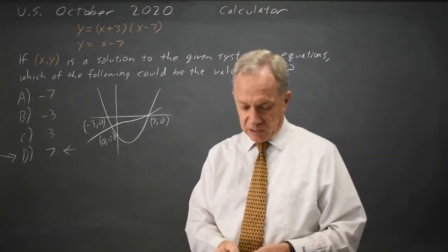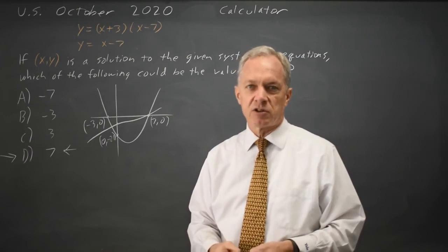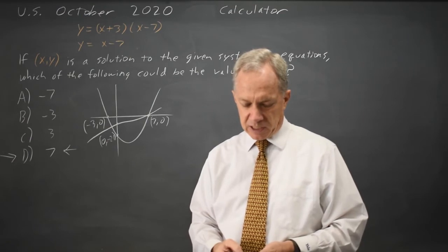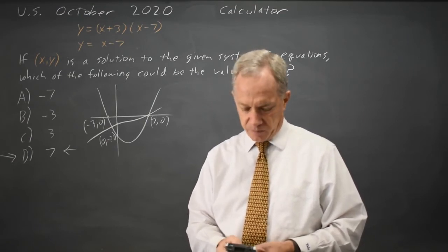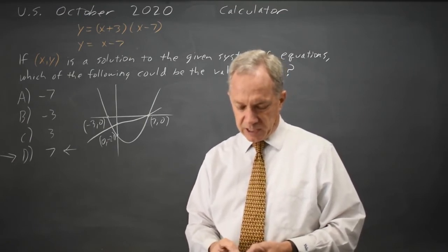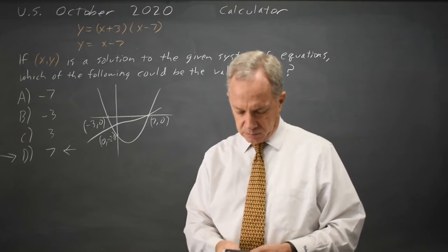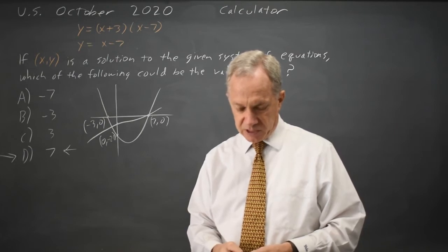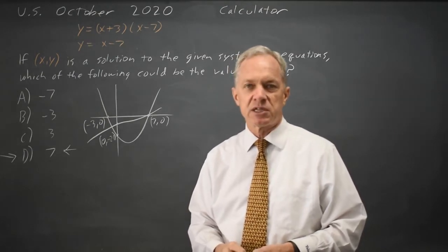And I can find the point of intersection using the intersect feature on any graphing calculator, and I get x equals negative 2, or finding it again and moving my cursor closer to the other point of intersection, I get x equals positive 7.